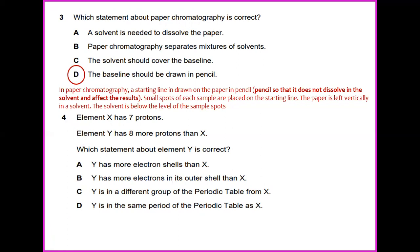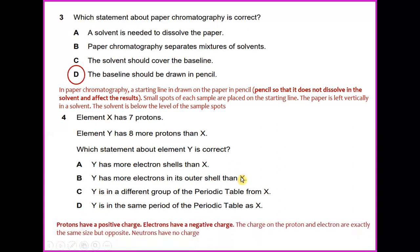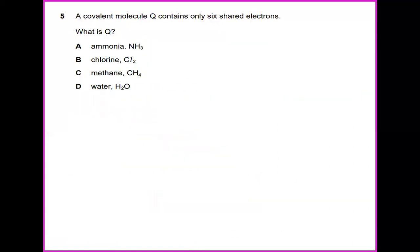Element X has 7 protons. Element Y has 8 more protons than X. Which statement about element Y is correct? Protons have a positive charge, while electrons have a negative charge. The charge on the proton and electron are exactly the same size but opposite. Neutrons have no charge. So the answer for this would be A, Y has more electron shells than X.